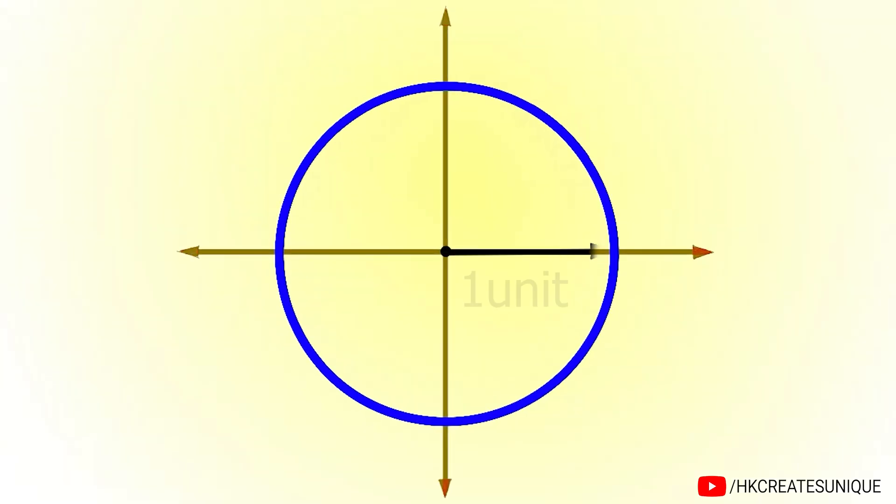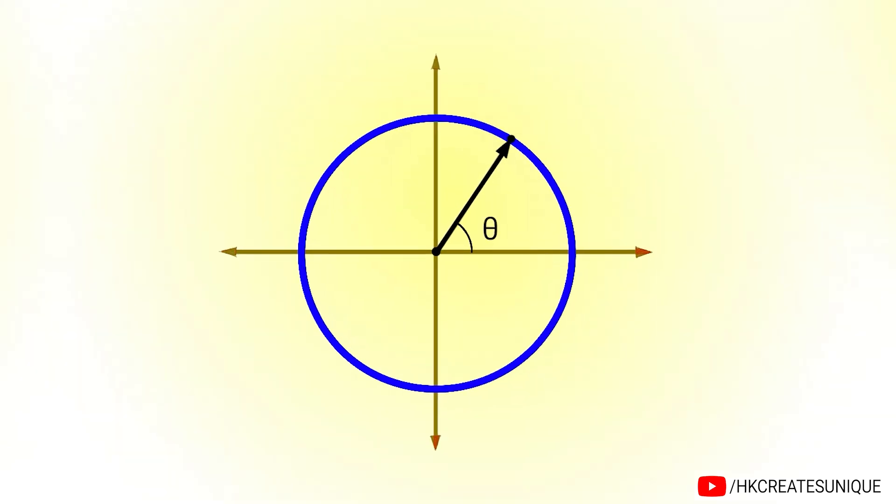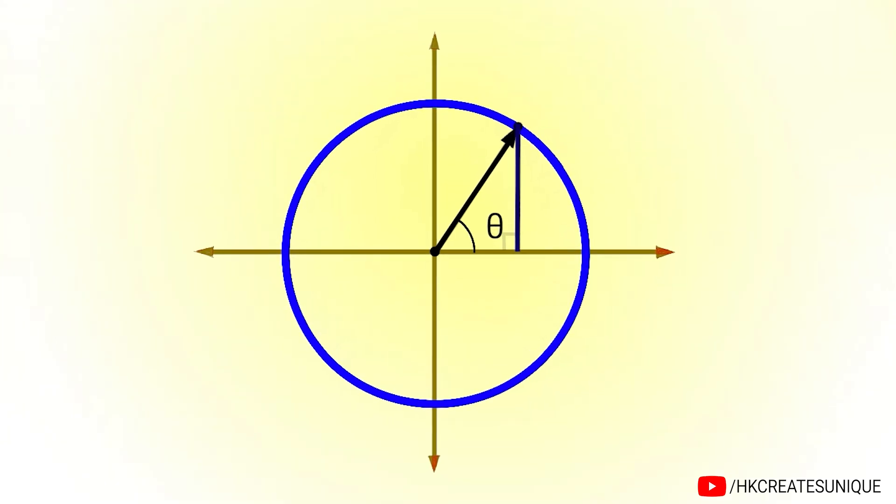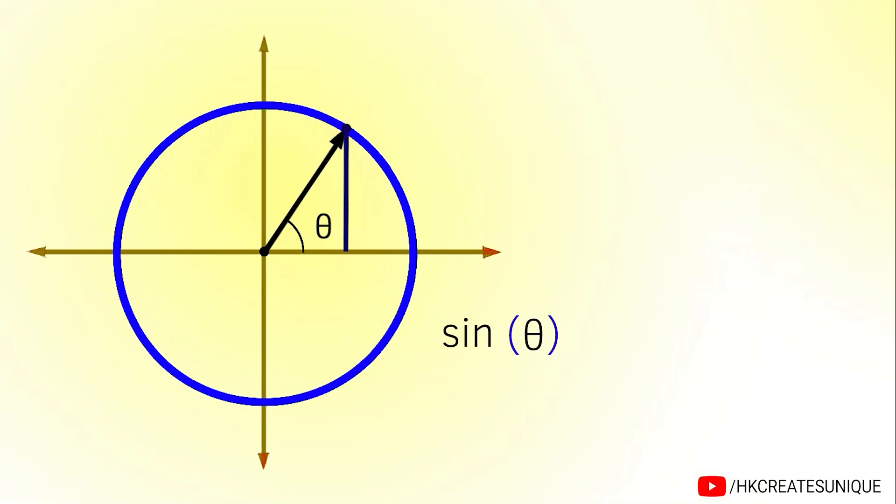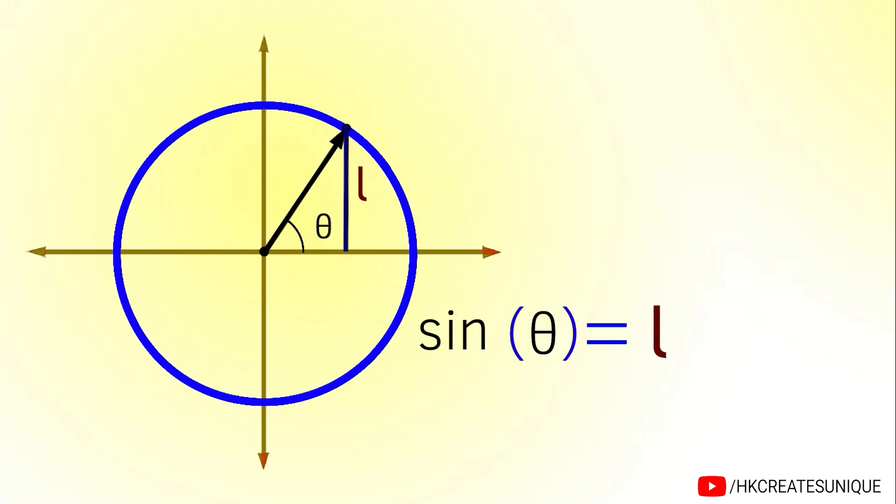The sine wave can be represented from the mathematical function sine theta. Consider a circle of radius 1 unit. The angle between the line and the horizontal is denoted by the Greek letter theta. Now if we draw a vertical line joining this point and the horizontal line, it forms a right-angled triangle. And in trigonometry, we learned that sine theta is equal to line opposite to angle theta, denoted by L, divided by hypotenuse of the right-angled triangle.